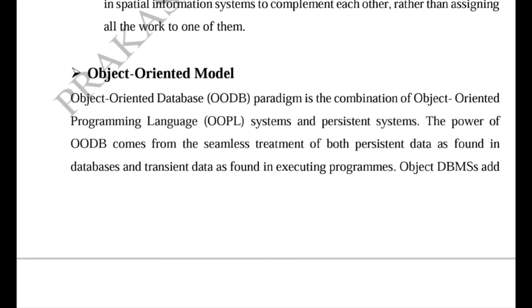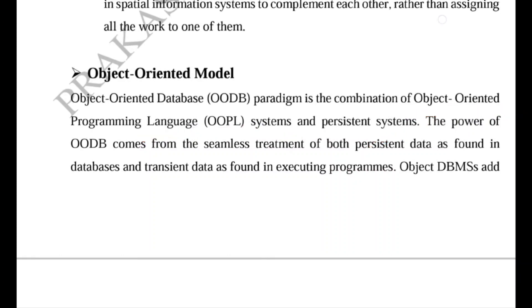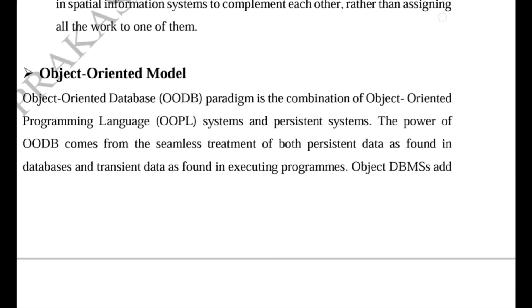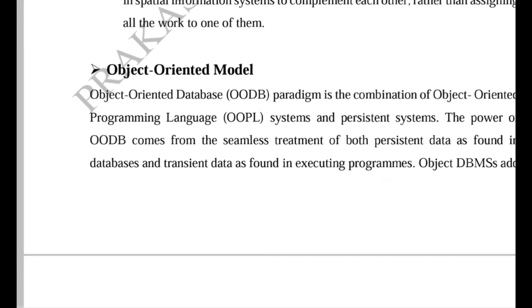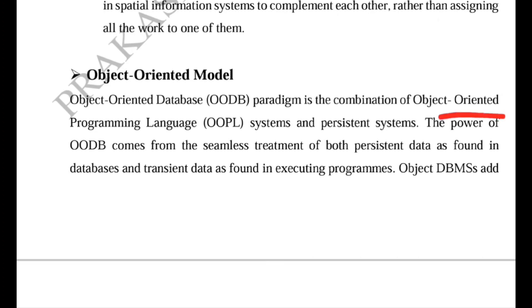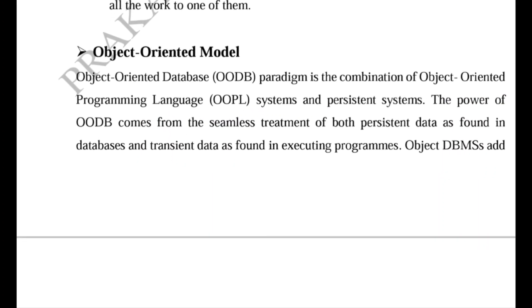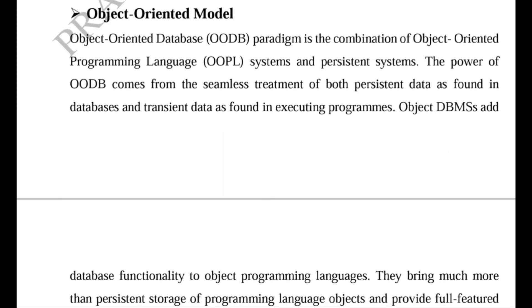The object-oriented database (ODB) is a combination of two things: OOPL (object-oriented programming language) and a persistent system. Spatial data is mostly persistent, meaning continuous. The power of OOPL comes from its seamless treatment of both persistent data found in the database and transient data found in the executing program, making it useful for both types of data.